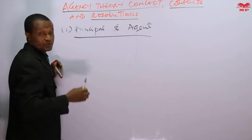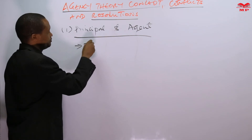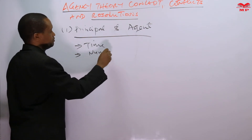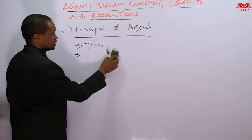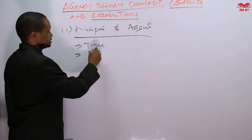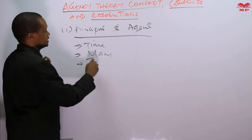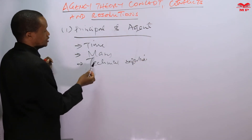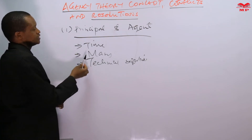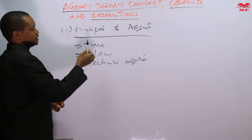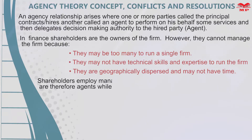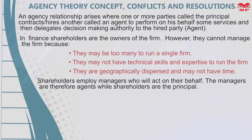The owners of the company may not have time to manage the organization. They may be too many — you may think of a company with, say, a thousand shareholders. They may also not have the technical expertise to manage the company. Because of these reasons, shareholders will hire or seek the services of an agent to run the company on their behalf.